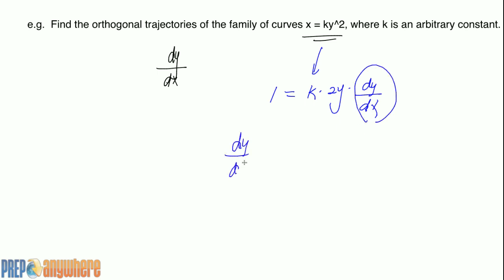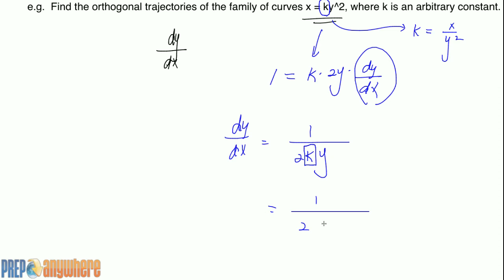Isolate dy/dx. You get dy/dx equals 1 over 2ky. We want the derivative function dy/dx to be in terms of x and y, not in terms of k, because k is arbitrary. We can pick k to be anything. However, k is actually dependent on x and y. k is actually x over y squared.